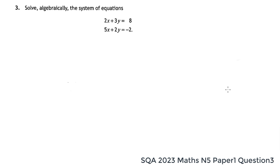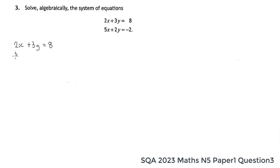Here's question three — simultaneous equations. I'm going to do this two different ways because there are two variables; we could eliminate the x's or eliminate the y's. Let's try them both ways. The first method is to eliminate the x's. We have two x's in the first equation and five x's in the second.